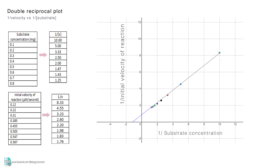In this new graph, the point where the line intersects with the y-axis is 1 over Vmax. Vmax can be calculated by using that point. In this case, the coordinate of this point is 0 and 0.9. Since 1 over Vmax equals 0.9, Vmax is 1.11.